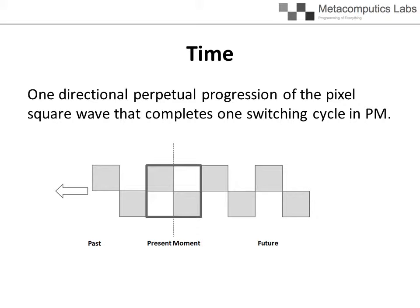Present moment is a window from which perpetual progression of the pixel square wave from right to left is perceived. Future is represented by the parts of the pixel square wave that are moving towards but have not yet arrived at present moment. Past is represented by the parts of the pixel square wave that have moved away from present moment.